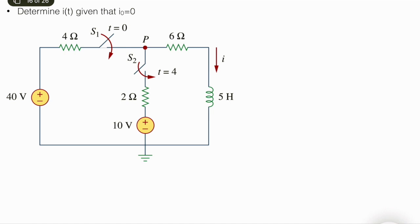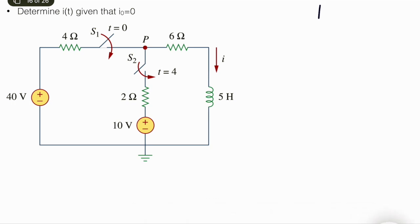If you try to solve everything simultaneously it will be quite wrong and very complicated. It's given that i(0) is equal to 0, so we don't need to do anything for the t less than 0 case. This switch is activated when t equals 0, the second switch is activated when t equals 4. So we need to analyze t from 0 to 4 first, and then we will go to the case where t is from 4 to infinity.